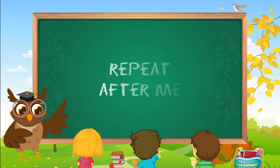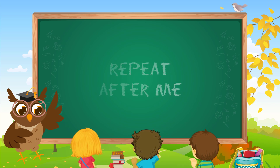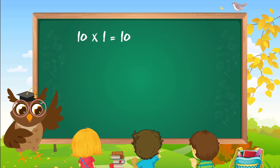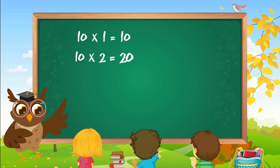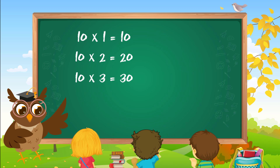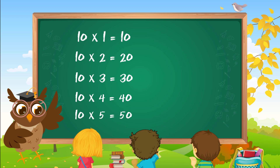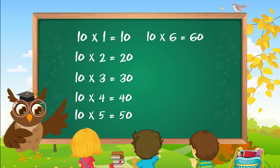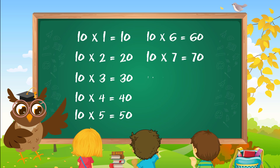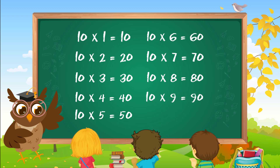Let's do this again. Repeat after me. 10 1s are 10. 10 2s are 20. 10 3s are 30. 10 4s are 40. 10 5s are 50. 10 6s are 60. 10 7s are 70. 10 8s are 80. 10 9s are 90.